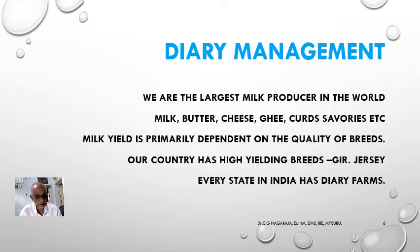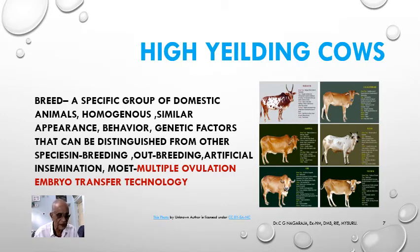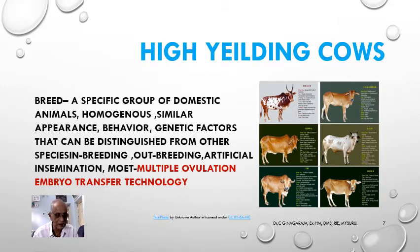In the PPT there are six images of cows of different high-yielding breeds. A breed refers to a specific group of domestic animals which are homogenous and similar in appearance, behaviour and genetic factors, but can be distinguished from other breeds by phenotype. Looking at the six images, there are cows of different breeds — Sindhi type, Haryana type, Jersey type — all easily identified by their appearance.